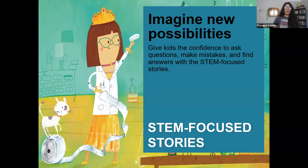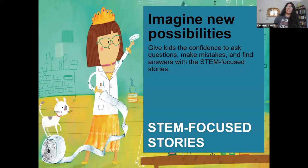Here at Albert Whitman, we believe that STEM-focused stories give kids the confidence to ask questions, make mistakes, and find answers. The recommended age group for these titles is pre-K to third grade, so around four to eight years old — but as we all know, picture books can be for everyone.